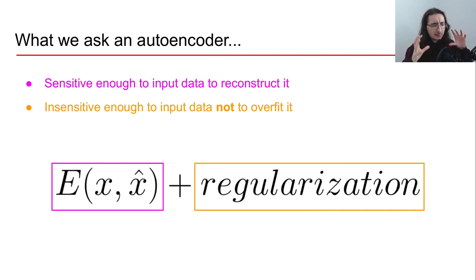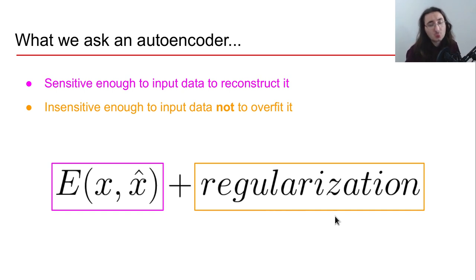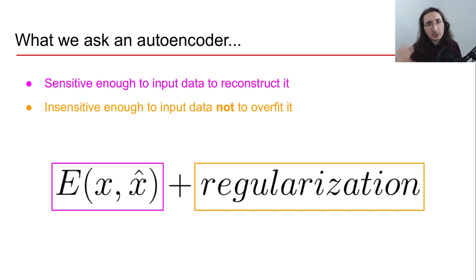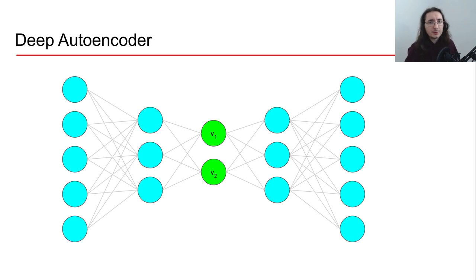I won't talk about regularization too much right now, but it will be a very important topic when we get to the upgraded version of an autoencoder — the variational autoencoder. So just keep that in mind for future videos. To summarize: the loss function for an autoencoder has two parts — the reconstruction error and a regularization element — which together help avoid overfitting the data.